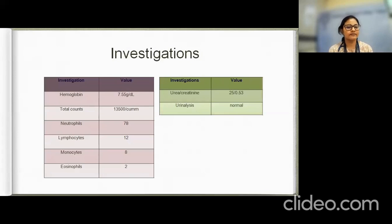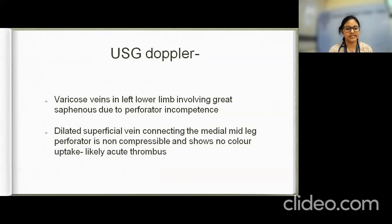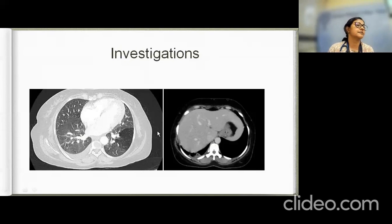Investigations showed hemoglobin of 7.55, total count of 13,500, neutrophils 17%, lymphocytes 12%, monocytes 8%, eosinophils 2%. Urea and creatinine were 25 and 0.53 respectively. Urinalysis was normal, ruling out pyelonephritis. Ultrasound Doppler of the left lower limb showed varicose veins involving the great saphenous vein with incompetent perforators, a dilated non-compressible superficial vein connecting the medial mid-leg perforator, suggesting acute superficial vein thrombosis. Renal vein thrombosis was high on the differential but ultrasound Doppler did not show evidence of it.